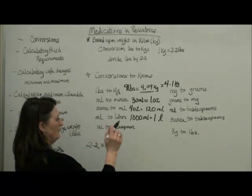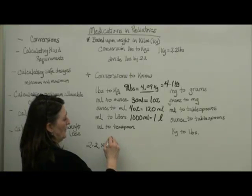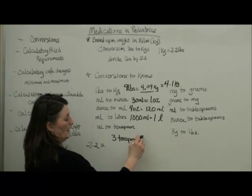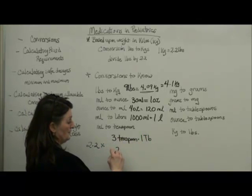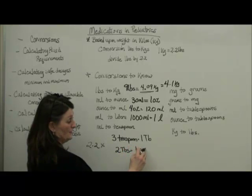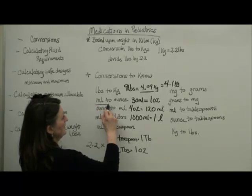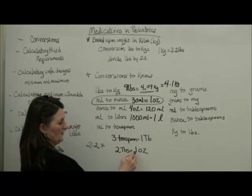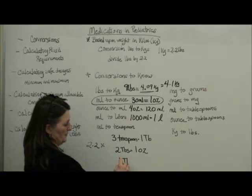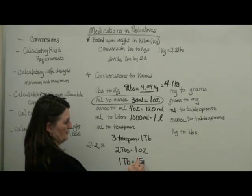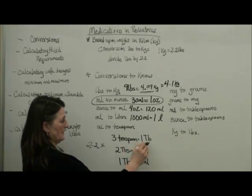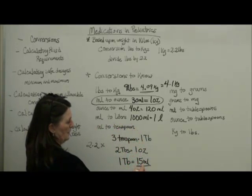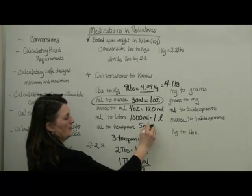Milliliters to teaspoons. Maybe if you're a cook, you are knowledgeable that there are three teaspoons in one tablespoon, and that there are two tablespoons to one ounce. And we already know that there are 30 milliliters in an ounce. If there's two tablespoons to an ounce, one tablespoon is 15 milliliters. And three teaspoons in a tablespoon, if we divide three, we have 15 divided by three. There are five milliliters in one teaspoon.